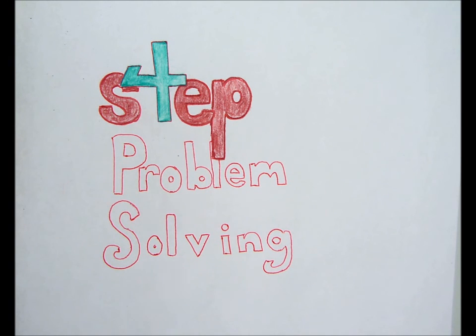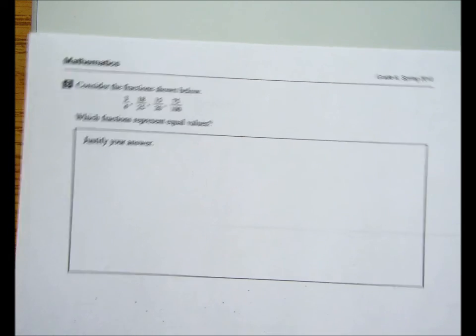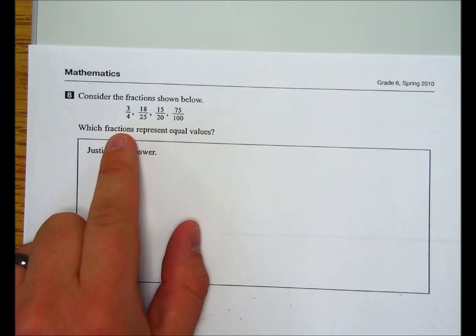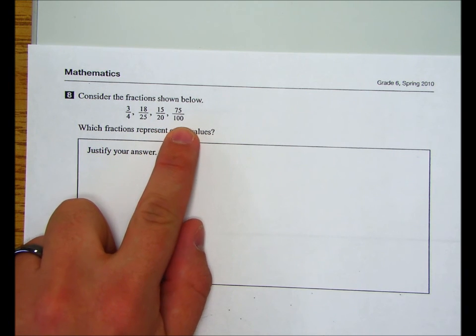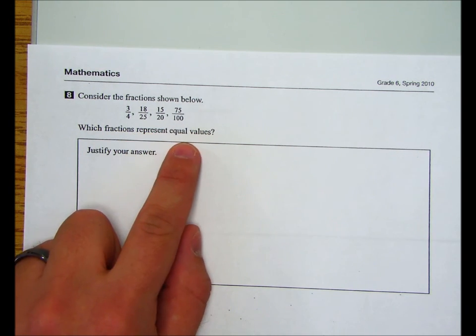So let's take a look at our problem. This question is taken from the EQAO released assessment questions, and the question is asking, consider the fractions shown below: 3 quarters, 18 25ths, 15 20ths, and 75 100ths. Which fractions represent equal values?